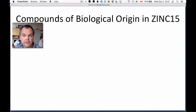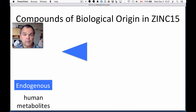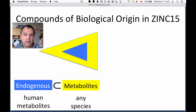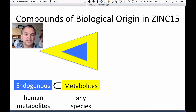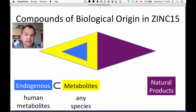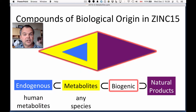How are compounds of biological origin handled in ZINC15? When referring to an endogenous human metabolite, we'll just use 'endogenous' for short — these are molecules that exist in our bodies and have their origin in our bodies. Then there's a second level called metabolites of any species, and all endogenous human metabolites are a member of that set. Natural products have no overlap with metabolites — remember, natural products are secondary metabolites. When you put the natural products and all the metabolites together, you have the biogenic compounds.